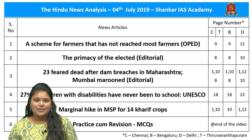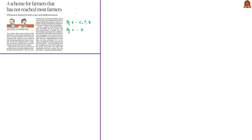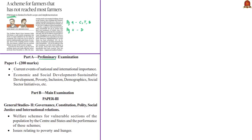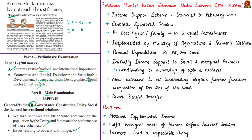Our first article discussion is about the scope and implementation of the PM-Kisan scheme. This will be useful in the preliminary examination under current events of national importance, and also under economic and social development, particularly in poverty, inclusion and social sector initiatives. It is also relevant in the main syllabus under GS Paper 2 in welfare schemes for vulnerable sections and issues relating to poverty. The article is about the Pradhan Mantri Kisan Samman Nidhi Yojana scheme, and the author discusses the scope and implementation of PM-Kisan.